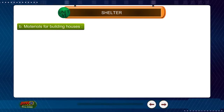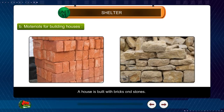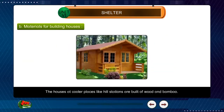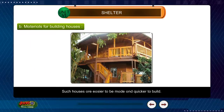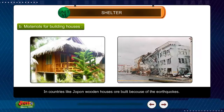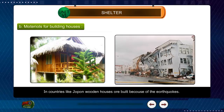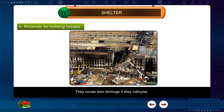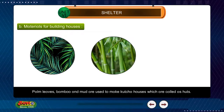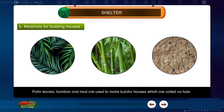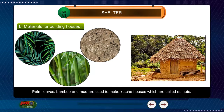Materials for Building Houses: A house is built with bricks and stones. The houses at cooler places like hill stations are built of wood and bamboo. Such houses are easier and quicker to build. In countries like Japan, wooden houses are built because of earthquakes — they cause less damage if they collapse. Palm leaves, bamboo and mud are used to make kacha houses, which are called huts.